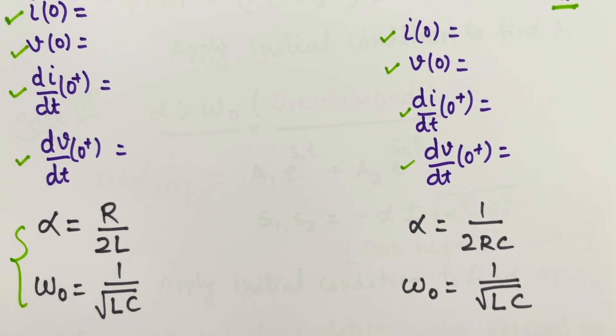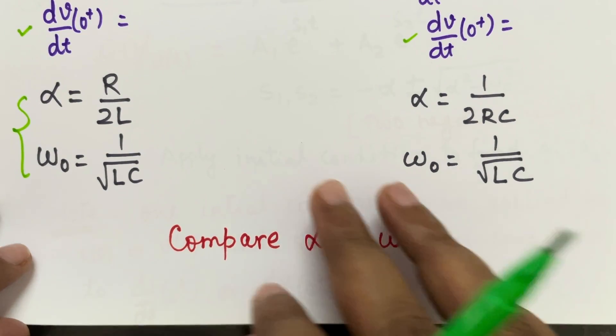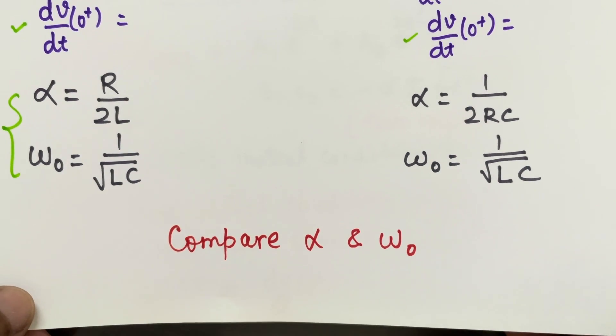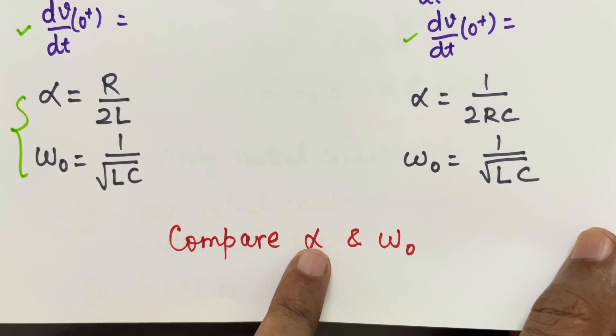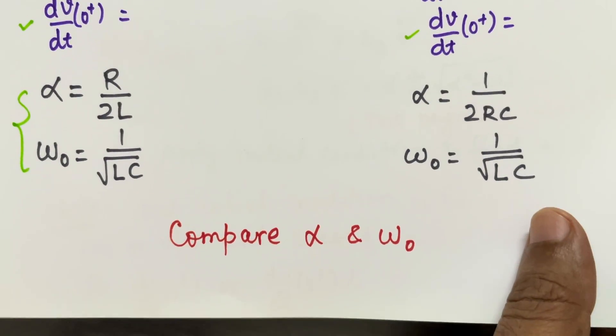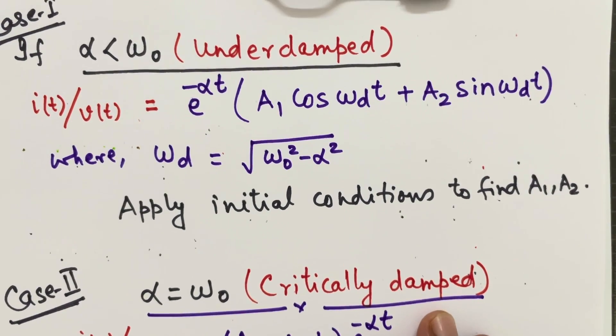And the next step, we will be comparing the value of alpha and omega naught. So there is a possibility that alpha and omega naught both are same or alpha is higher or omega naught is higher. So next step we are going to see the conditions.